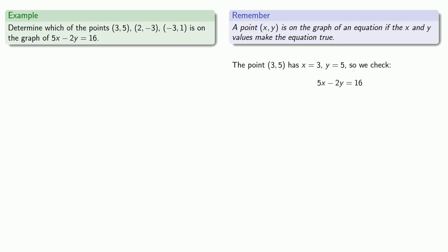And do a little arithmetic. Since 5 is not equal to 16, the equation is false, and so the point (3, 5) is not on the graph of 5x - 2y = 16.